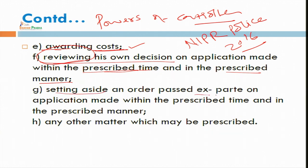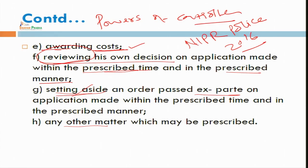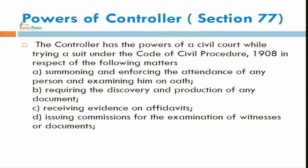The controller of patent also has power to review his own decision and to set aside an order passed ex parte on application. When an application is rejected or an order is passed ex parte — without the other party being present — he can also set aside that order. This is because an order passed without following the principle of audi alteram partem ('let the other party be heard') may be set aside when another party appears and gives justified cause.